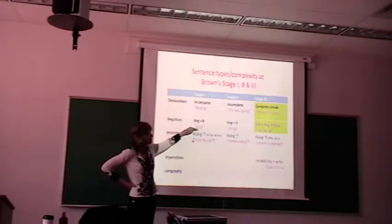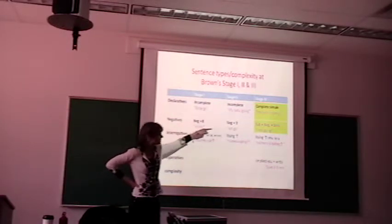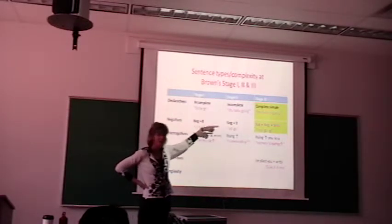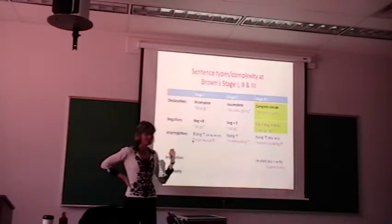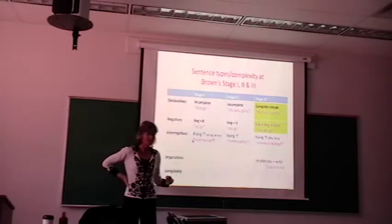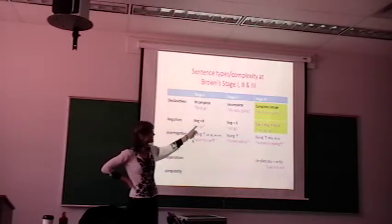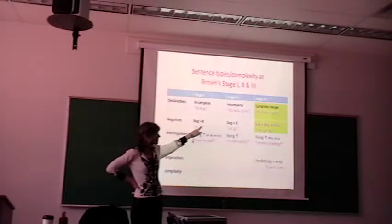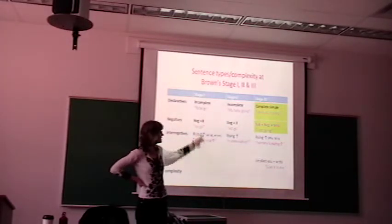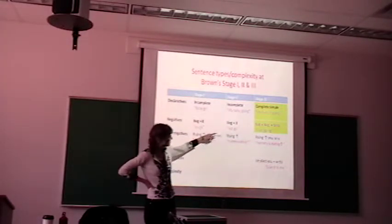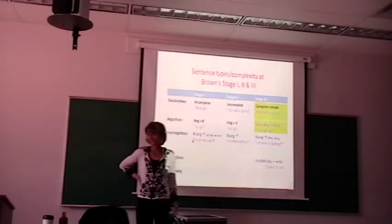At stage 1, they just throw the negative word. Stage 1 and 2, they throw the negative word in front of the subject or the verb. They just, how much you heard kids? No go. No eat. No me. They just put the negative in front of the subject or the verb. And the only difference between 1 and 2 is they use no exclusively and here they start using not.